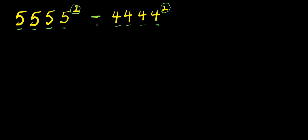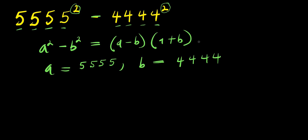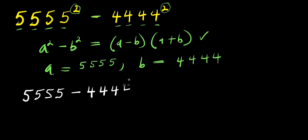There is a minus here, so we can make use of the difference of two squares. Remember: a² minus b² equals (a minus b) times (a plus b). From here, a equals 5555 and b equals 4444. So let's insert it right here — that means a minus b will simply be 5555 minus 4444.